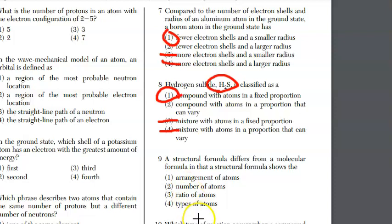For number 9, a structural formula differs from a molecular formula in that a structural formula shows us the structure, which is the arrangement of the atoms in that compound.